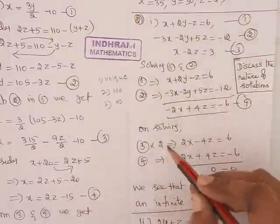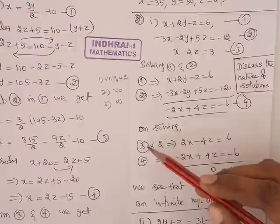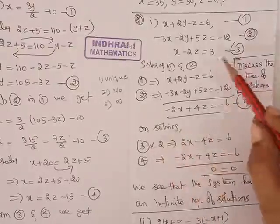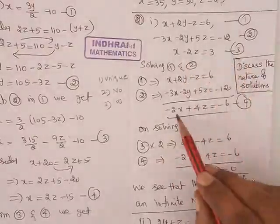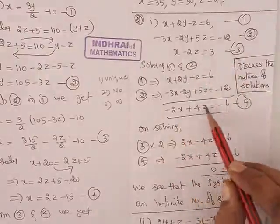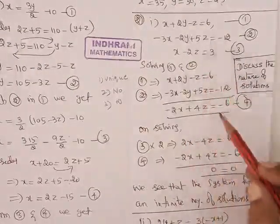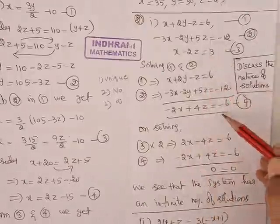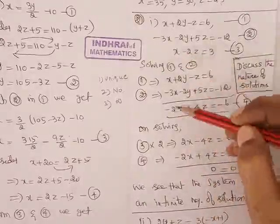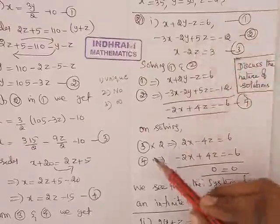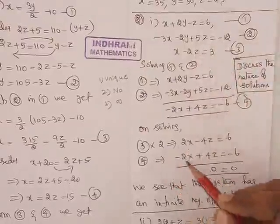Again, I am going to solve equation number 3 and 4. Because in equation number 3, x is a term only. In equation number 4 also, containing x is a term only. So I am going to solve equation 3 and 4. For that, I am going to equate either coefficient of x or coefficient of z. Now I am going to equate coefficient of x.